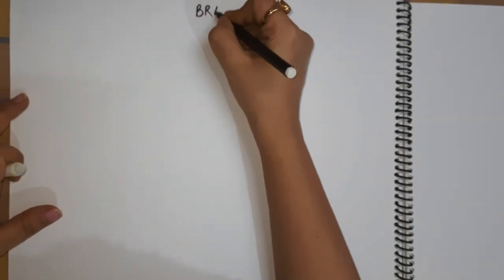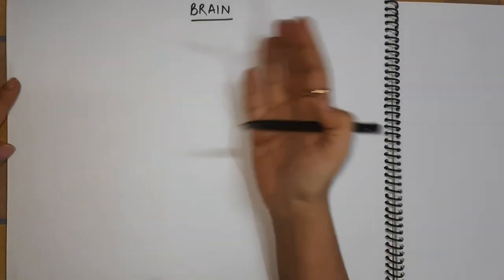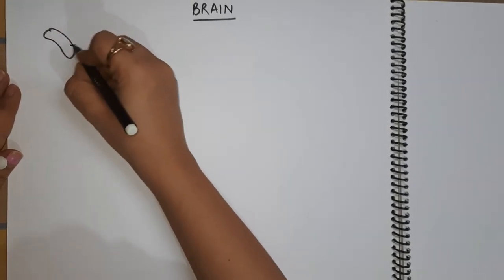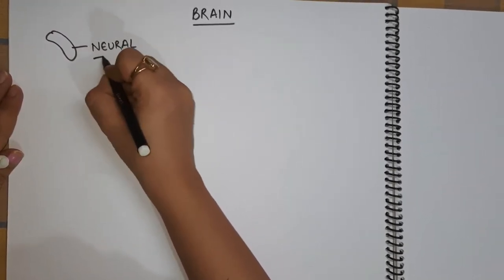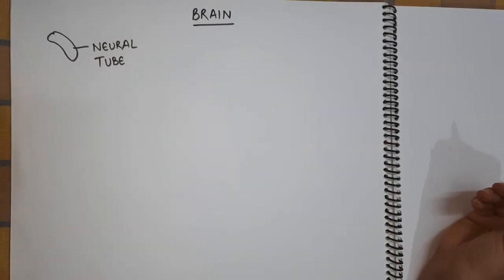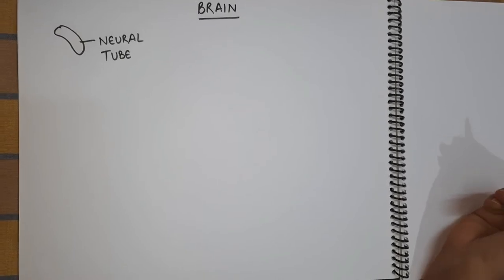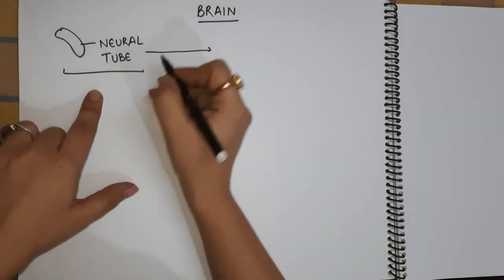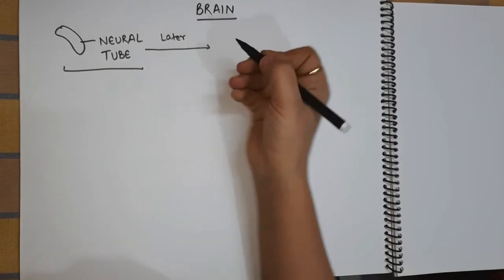Today we will be learning about how the brain develops from the embryonic stage till the time it goes into its mature form. Initially in the embryonic stage, the brain is in the form of a neural tube. So the brain is just a neural tube — it is not as complex as it looks in a fully grown brain of a young adult. But initially in the embryonic stage, it is in the neural form, and later on it starts to grow and develop.